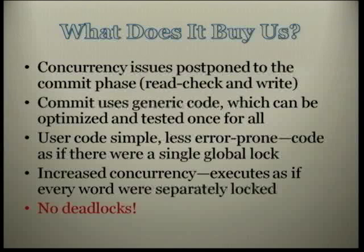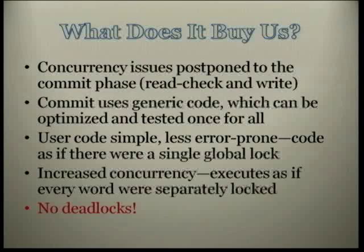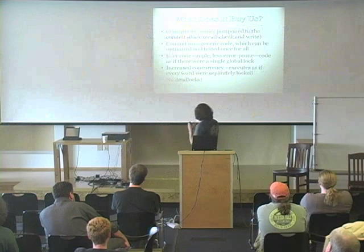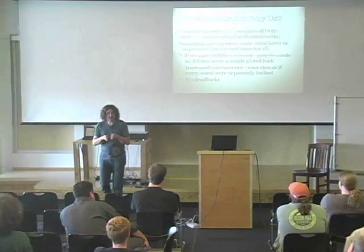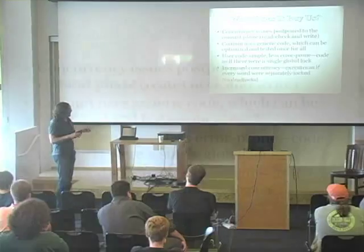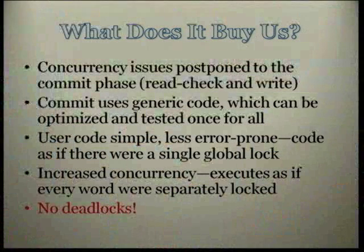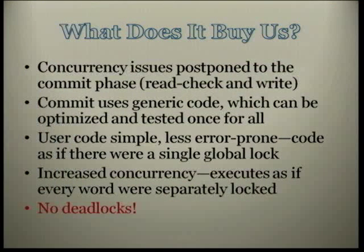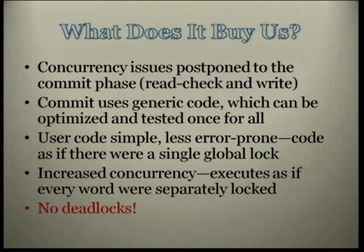Bye-bye concurrency as a headache. The code is less error-prone and is written as if there were one big global lock — very coarse-grained — but implemented as if every single word were individually lockable. The granularity of locking and concurrency is much smaller. This increases concurrency: if two threads are accessing different parts of a tree, they won't conflict — it's as if you were locking individual nodes, not the whole tree. And you know how difficult it is to write concurrent code with multiple fine-grained locks — you're begging for deadlocks.